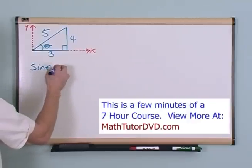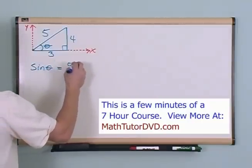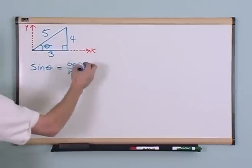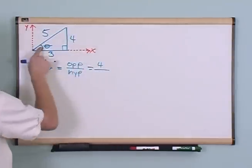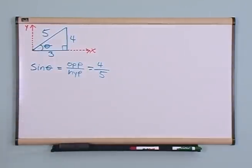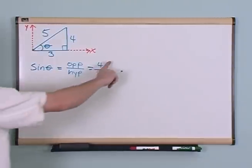The sine of theta is equal to opposite over hypotenuse. Opposite is 4, opposite of this angle, hypotenuse is 5. So that's the sine of that angle, four-fifths. Notice this number is less than one.